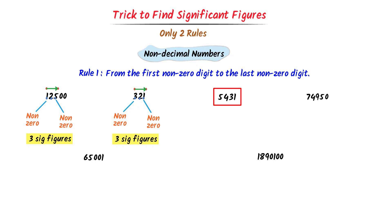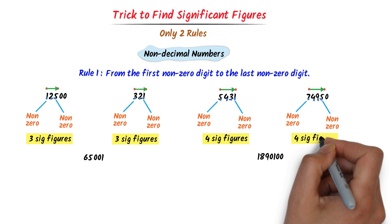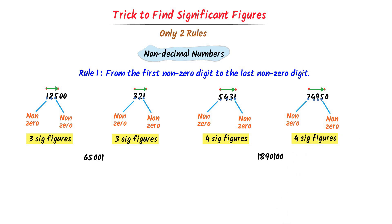In case of the third number, I go from the first non-zero digit to the last non-zero digit. The first non-zero digit is 5 and the last non-zero digit is 1. For the fourth number, I go from the first non-zero digit to the last non-zero digit — the first non-zero digit is 7 and the last non-zero digit is 5. I go from 7 to 5: 1, 2, 3, 4. There are 4 digits or 4 significant figures present in this number.